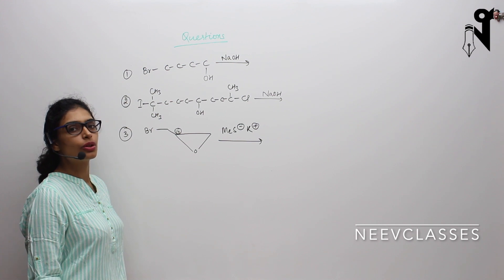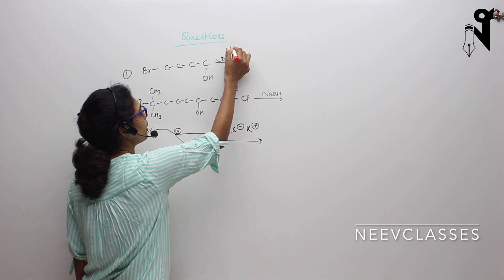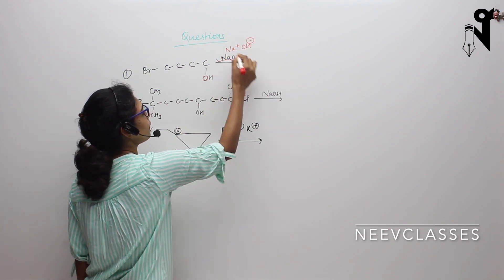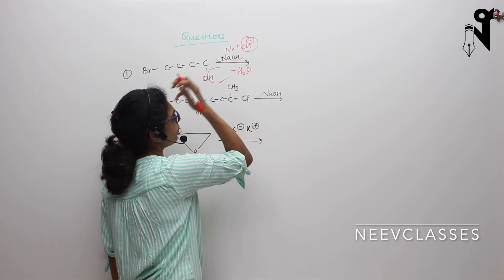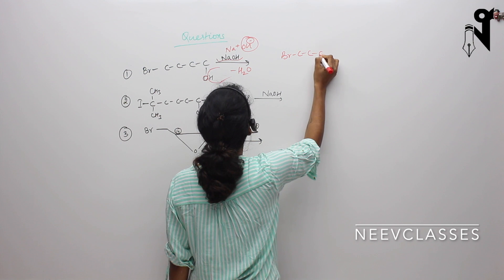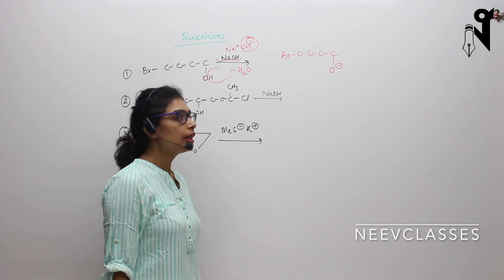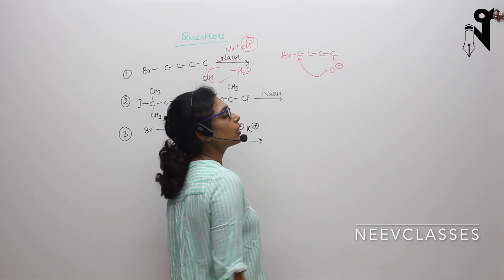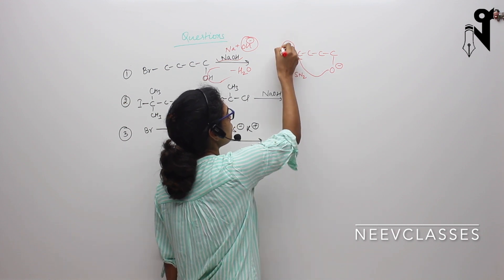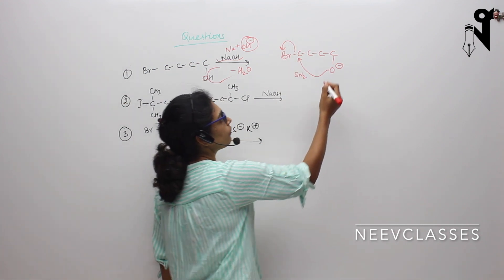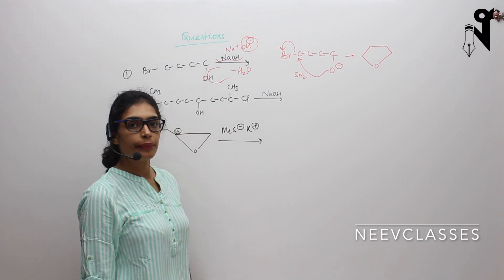Now this NaOH will split into Na+ and OH-. OH- will take this hydrogen with it. Loss of water will take place. It will form Br-C-C-C-O-, which will act as a nucleophile internally. It will attack on the carbon where the leaving group is present and will do a back attack — SN2 reaction. This will kick out bromine and the chain will become a 5-membered epoxide.